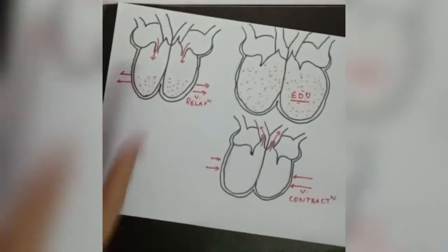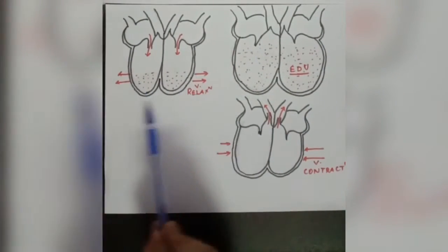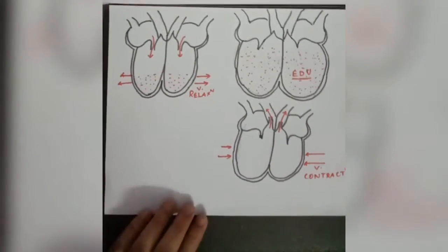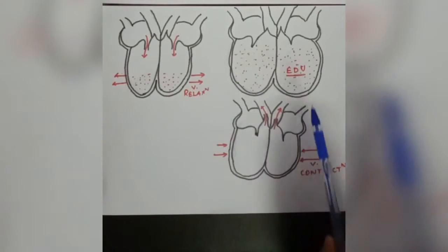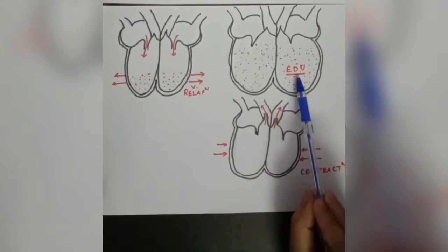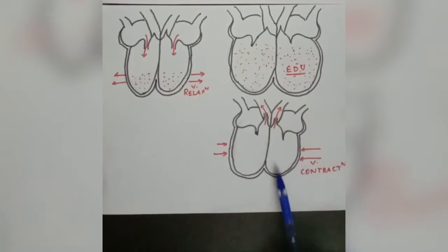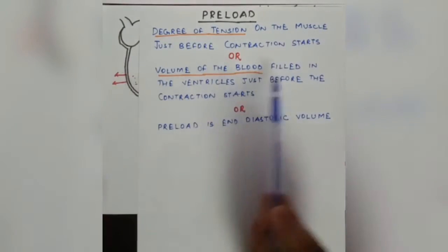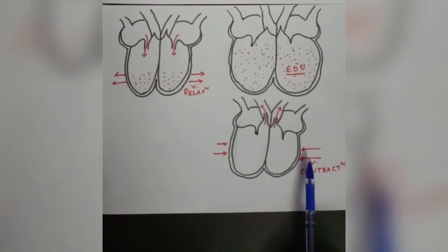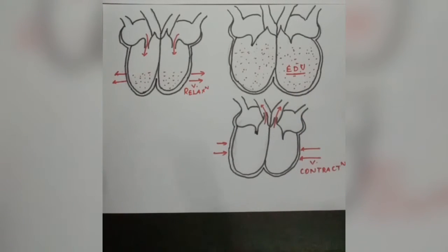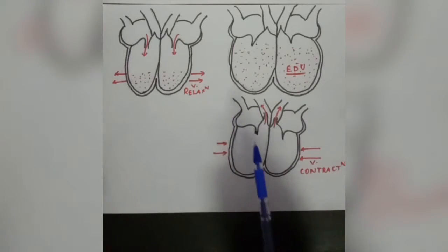We are going to understand this from the diagram. This shows the heart in the diastole condition — that is ventricular filling. Blood is filled in the ventricles while the ventricles are relaxed. After ventricular filling is complete, when diastole ends, the volume at that point is called end diastolic volume. When the end diastolic volume is present and diastole is finished, then ventricular contraction starts and blood ejection begins.